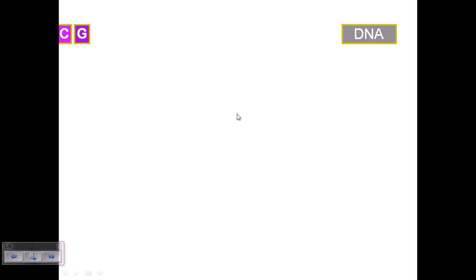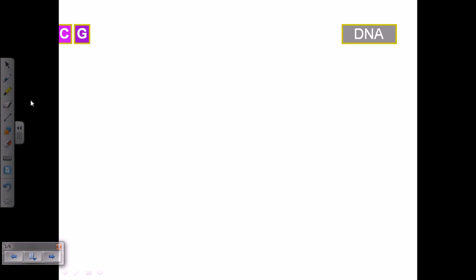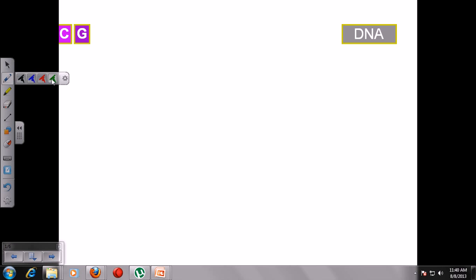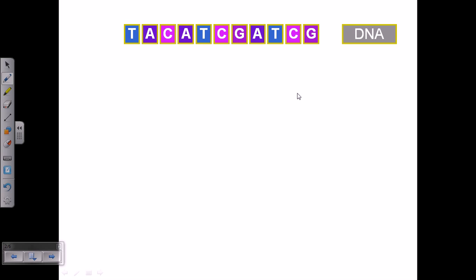This is called the linking or central dogma of biology. Now let us look at this case in much more detail. Let us begin. Now here it is DNA and RNA. If we go with the transcription then what will happen?